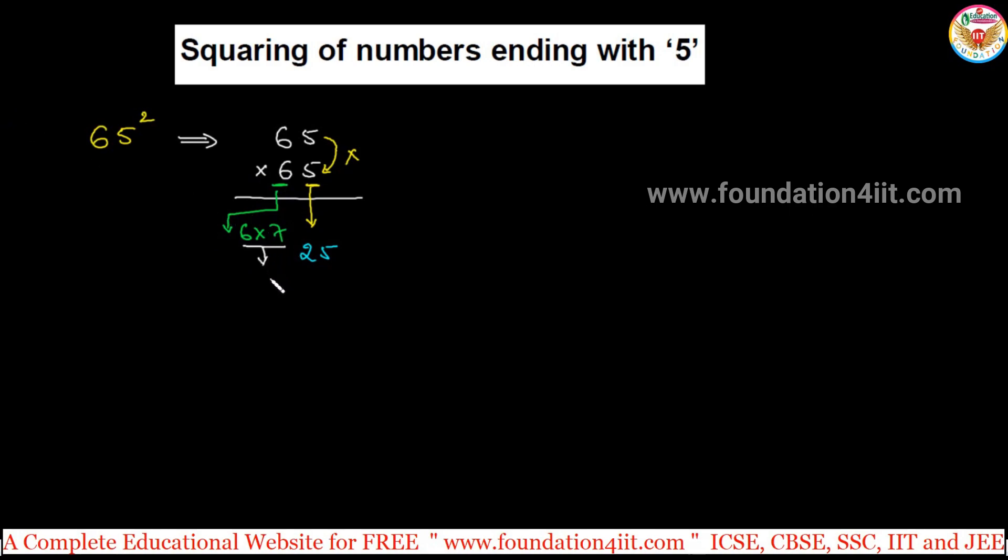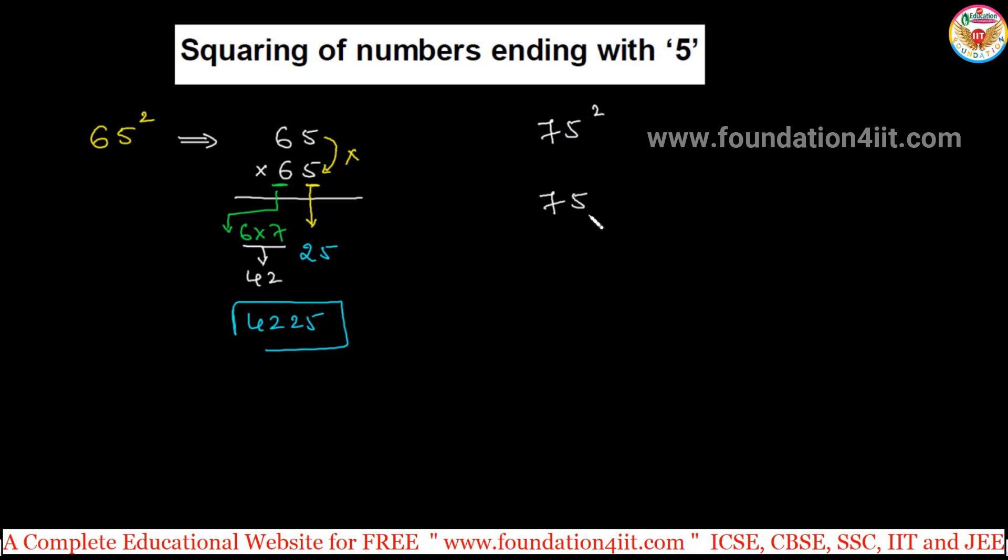6 into 7 is 42. Now the answer is 4225. Units and tens place, then taking the next number you multiply and write, 5 into 5 is 25. See one more example: the question is 75 squared.